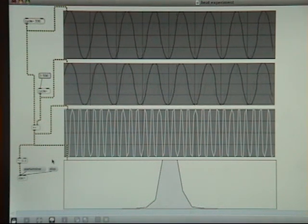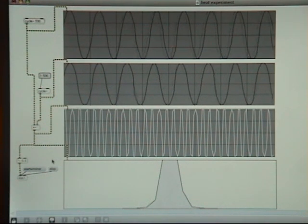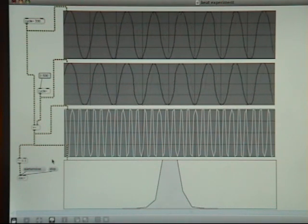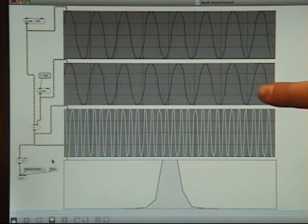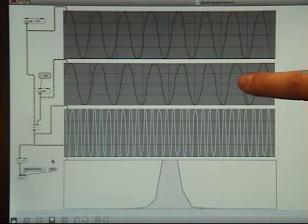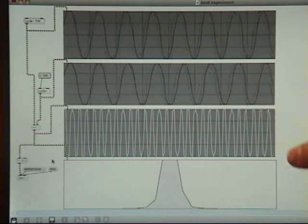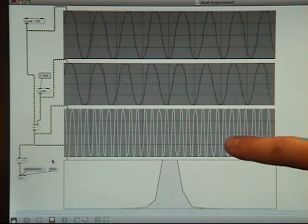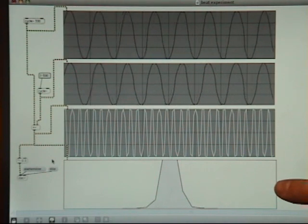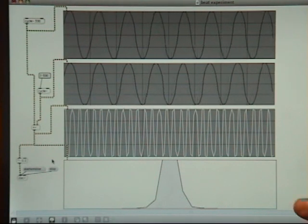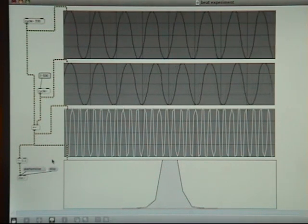So in this experiment, I'm going to demonstrate beat frequency and what it looks like and what it sounds like. The first graph right here is showing a 500 Hz sine wave. The second graph here is currently also showing a 500 Hz sine wave, but I'm going to change that frequency. And I'm adding those two signals together to get this graph here. And this bottom graph here is the fast Fourier transform. It's showing the frequency content of that signal.